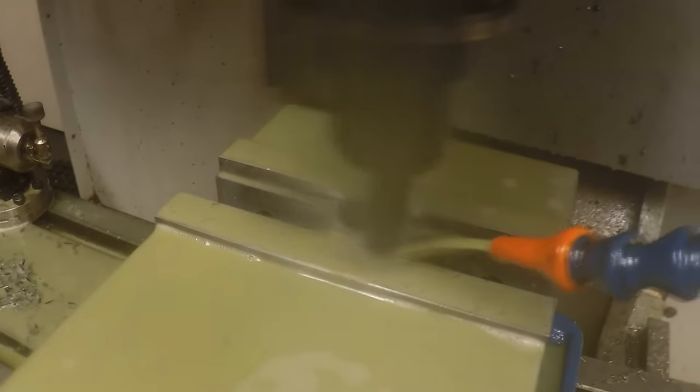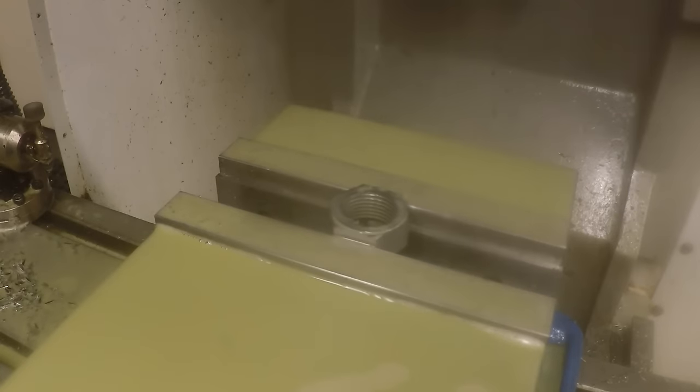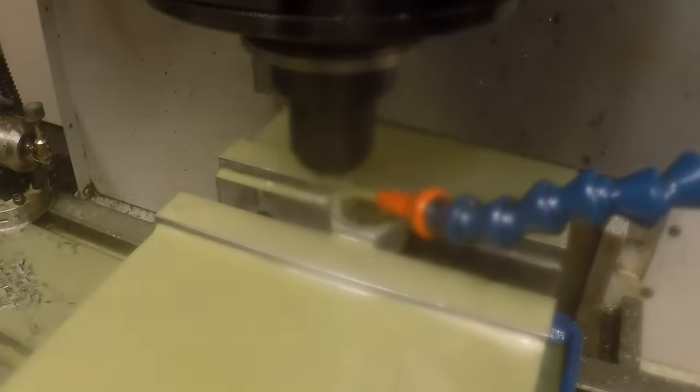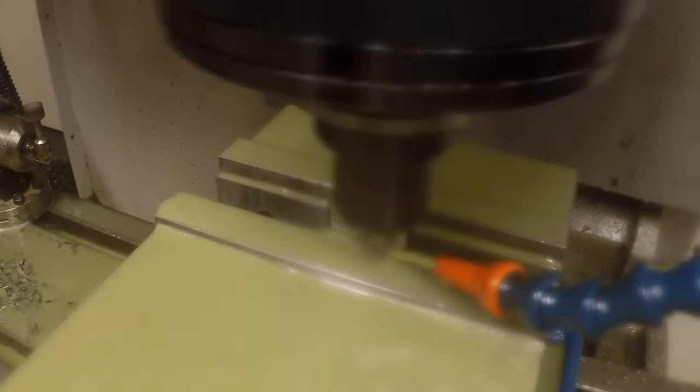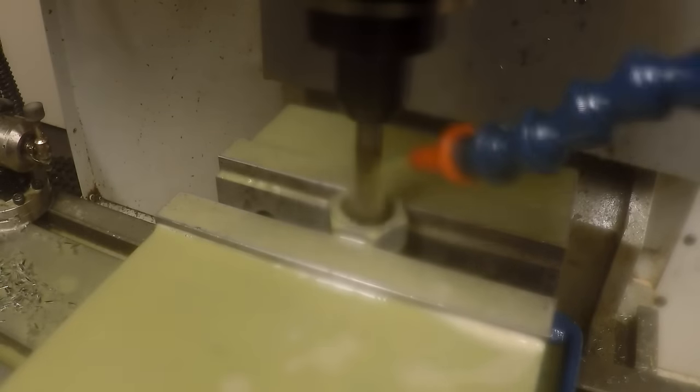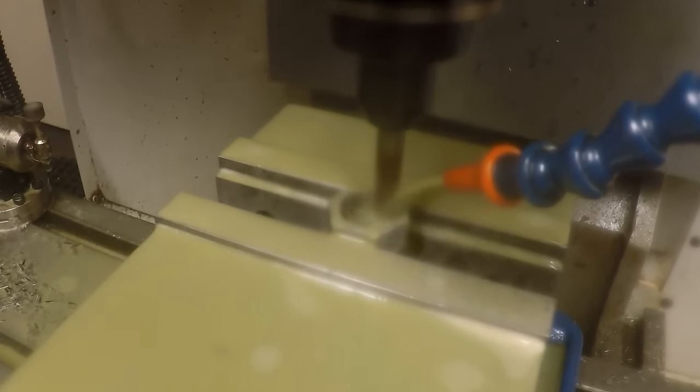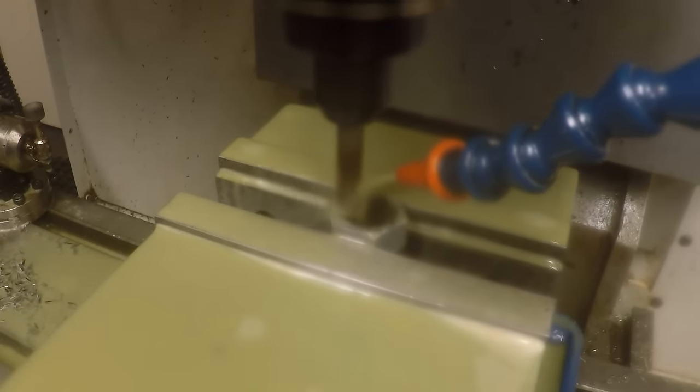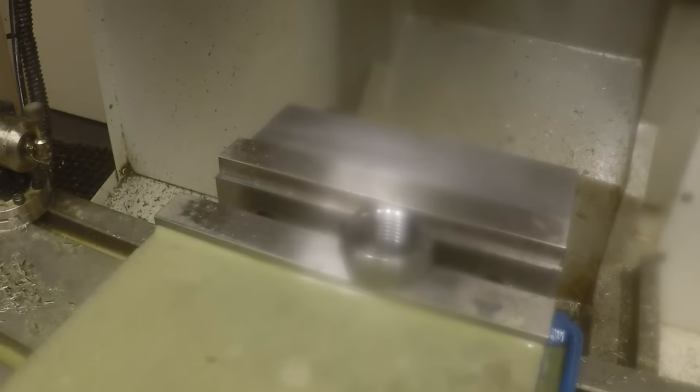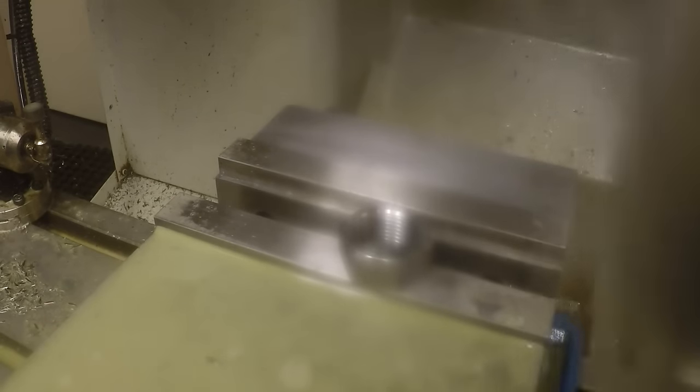And then we're just going to mill the other side. It's actually the same as the other program, just with a few of the tools missing. It's basically the same program, just face the top, chamfer the top, put a step in the OD, chamfer the OD, and then chamfer the bore, and measure the part with the micrometer here. And then here's the finished part.